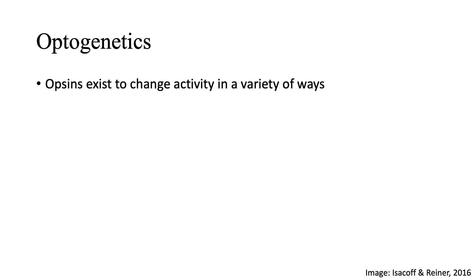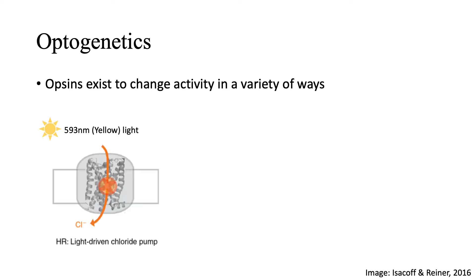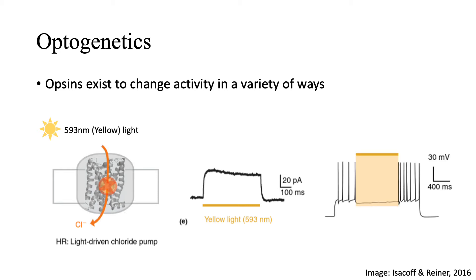Opsins for optogenetics now exist in many flavors and they allow scientists to manipulate activity in a variety of ways. For example, one could use a yellow light-gated chloride channel. Activation of this channel would produce large outward currents that are capable of effectively silencing a neuron's activity.